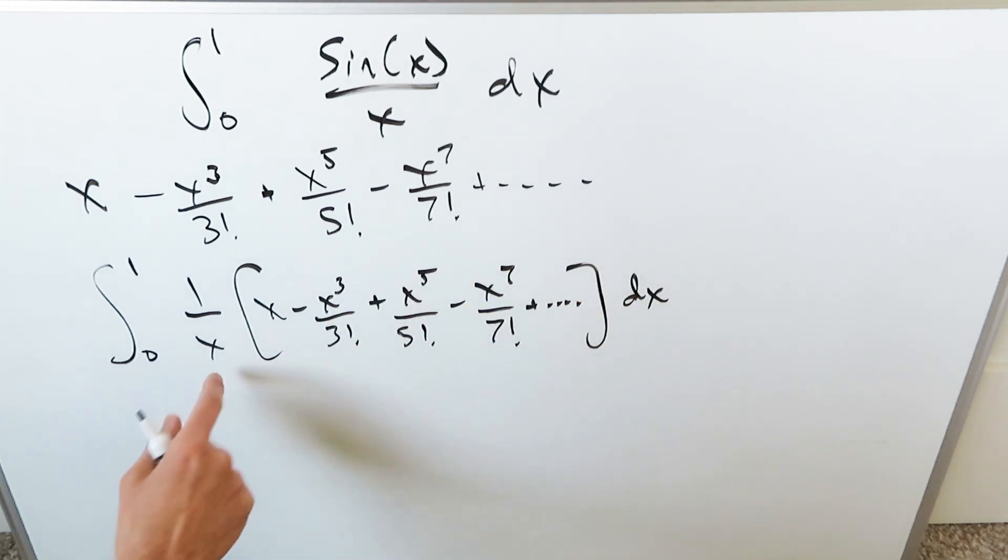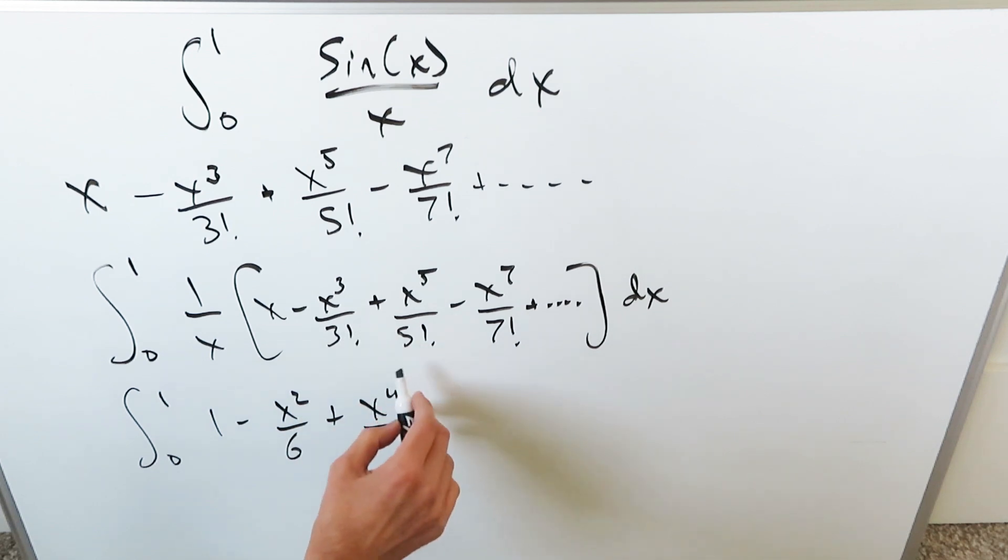Simplify this x - denominator x with the numerator x's. When you do it, you'll have 1 minus x squared over 3 factorial, which I'll write as 6. Then I'll have x to the 4 over 120, then a minus x to the 6 over 5,040, and we'll just hold it right there, dx.